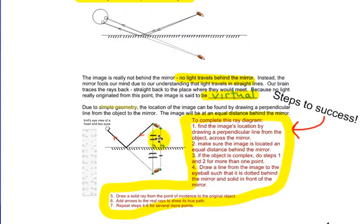So the steps in which we can draw a diagram like this. You may want to highlight this, call it steps to success. Find the image location by drawing a perpendicular line from the object to the mirror. So if I'm using this part of the football, draw a perpendicular line to the mirror. Make sure the image is located an equal distance behind the mirror. So boom and boom, as you can see here, are congruent, same distance. First distance, second distance, point one, point two.